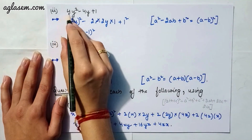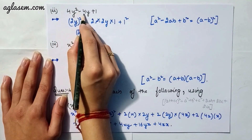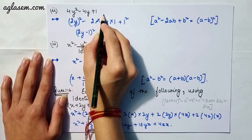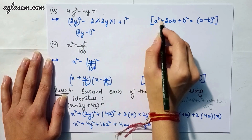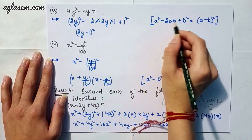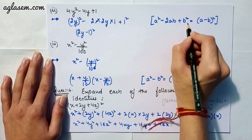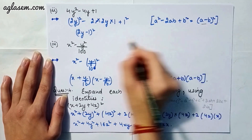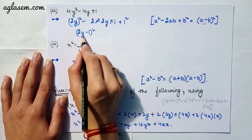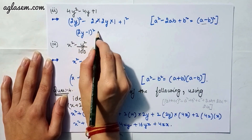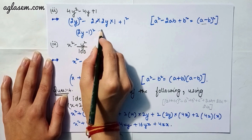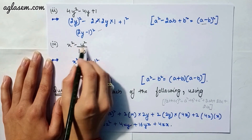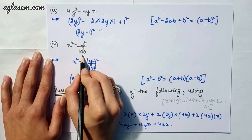Moving to our second part: 4y² − 4y + 1. Applying the formula a² − 2ab + b² = (a − b)², our answer is (2y − 1)².